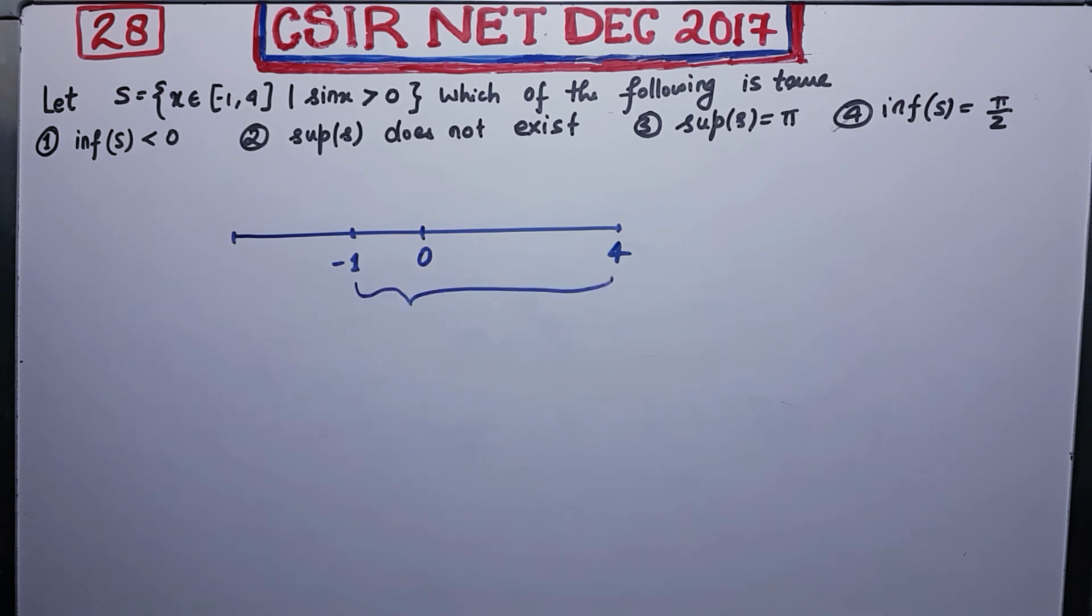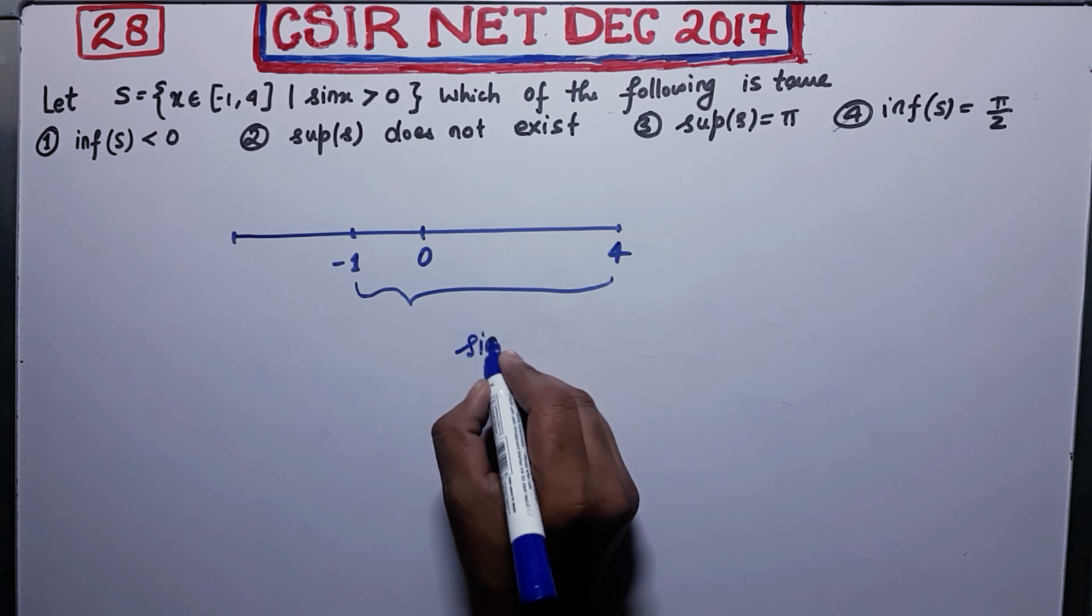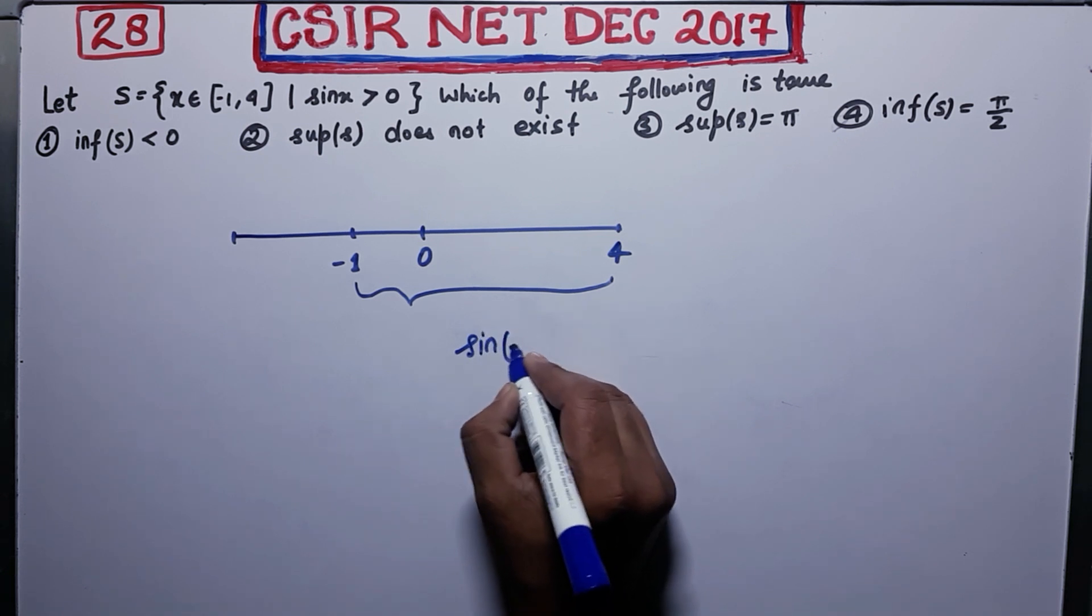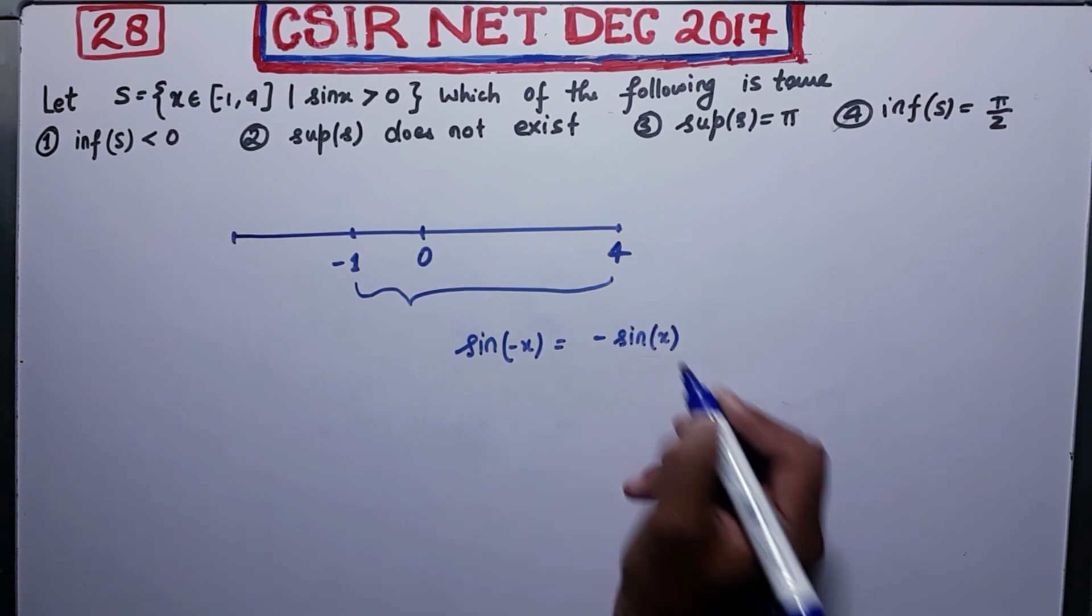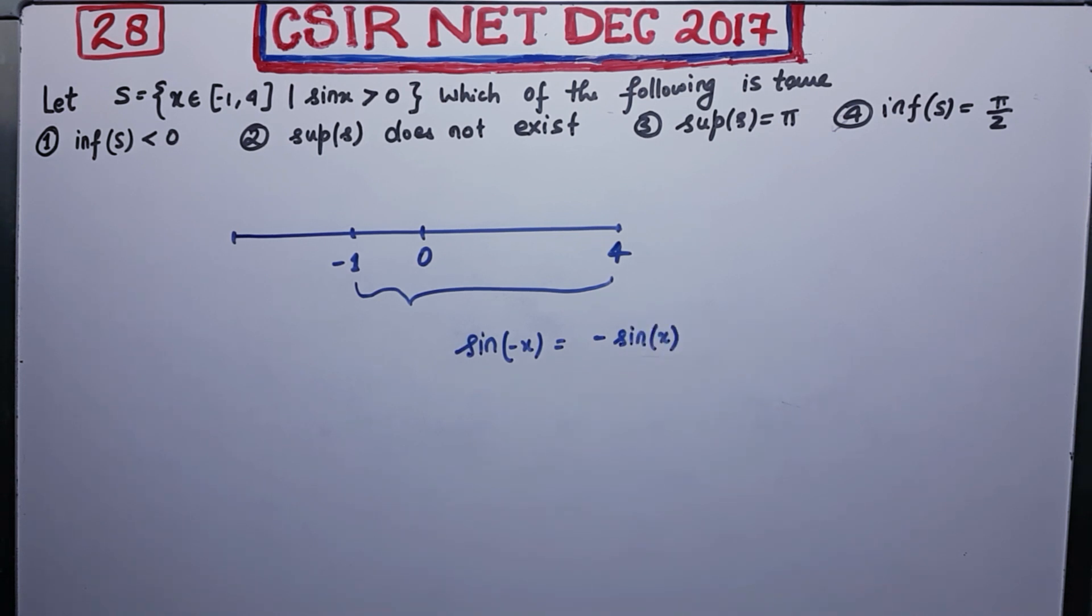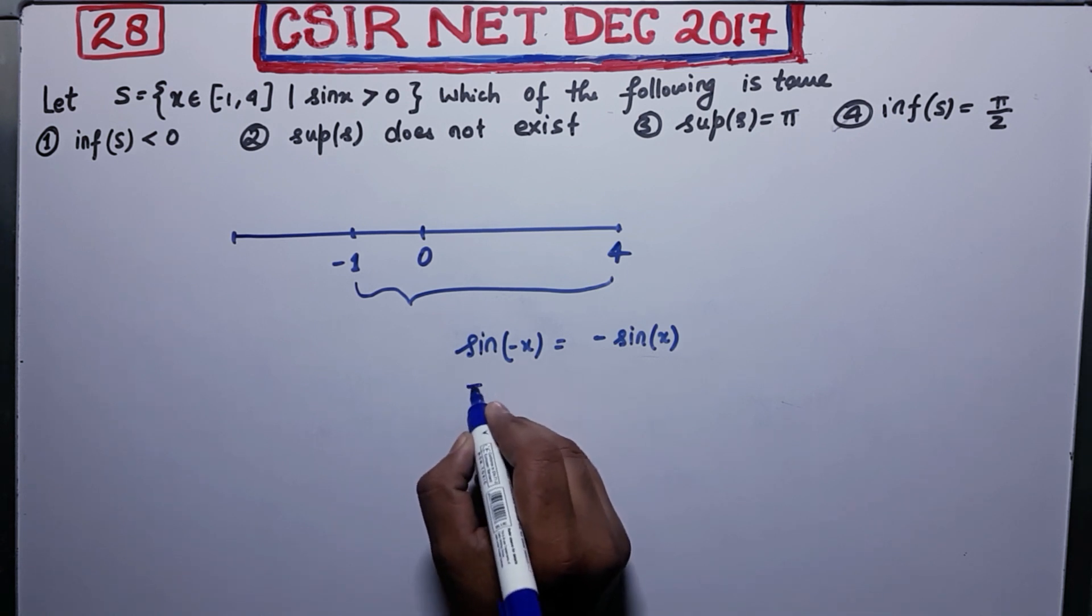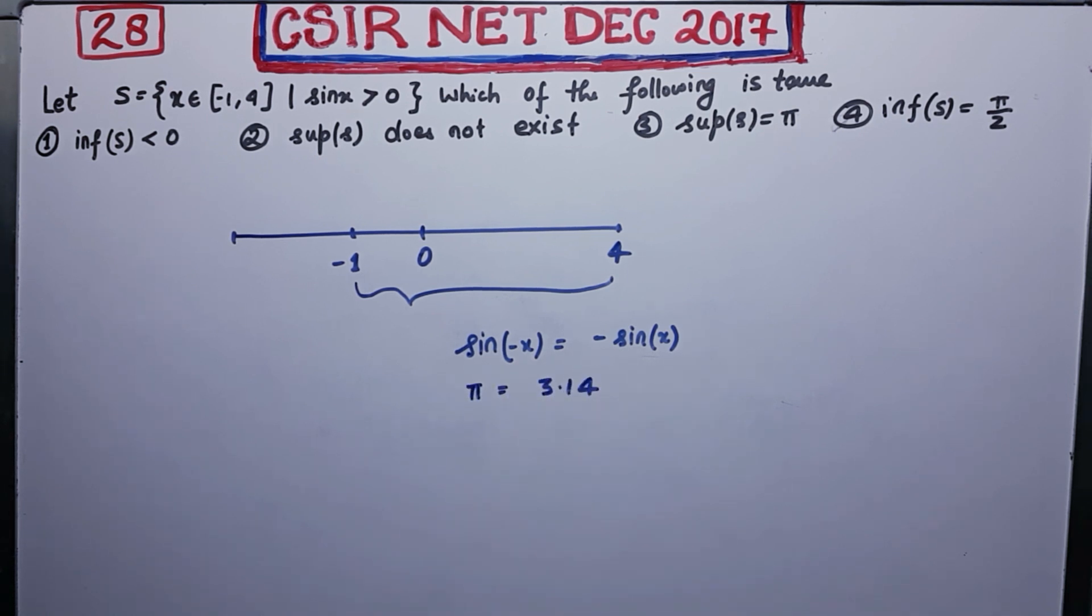Now, you know that sin of minus x is equal to minus of sin x. You already know that. Now, you should also know that π is actually 3.14. You know that π is actually 3.14.